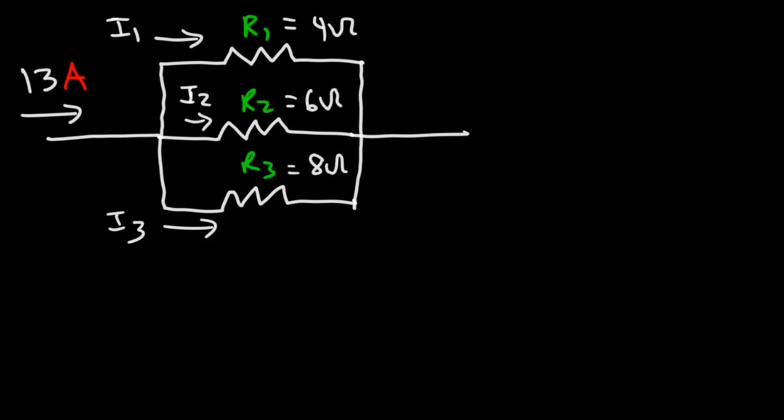It turns out that there is a formula that you could use. And here is one version of that formula. I1 is going to equal R2 divided by R1 plus R2 plus R1 times R2 divided by R3, and then all of this times the total current.